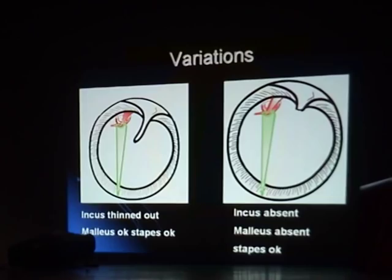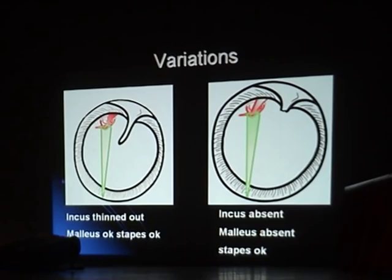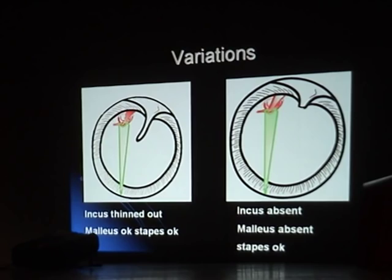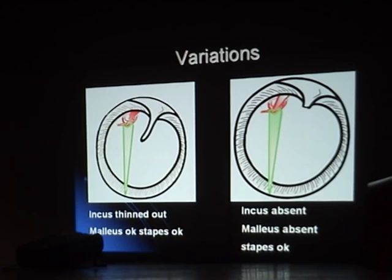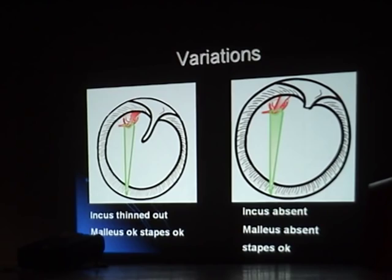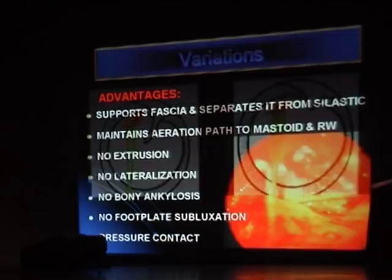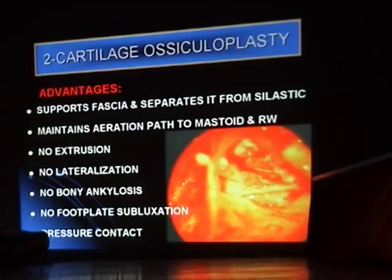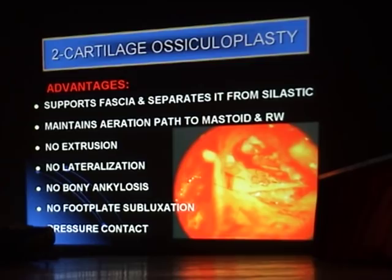If the malleus handle is absent but the incus and stapes are intact, placing a graft directly on the incudo-stapedial joint will cause lateralization and poor hearing. The solution is to place a cartilage from the depression in the inferior canal wall to the incudo-malleal joint, with the graft resting on the cartilage — giving excellent results. Advantages of the two-cartilage ossiculoplasty: it supports the fascia and separates it from the silastic, maintains mastoid aeration, and avoids extrusion, lateralization, bony ankylosis, footplate subluxation, with pressure contact maintained.